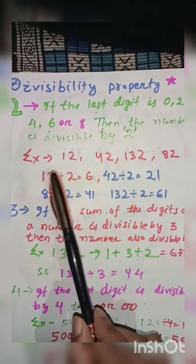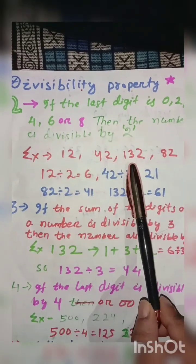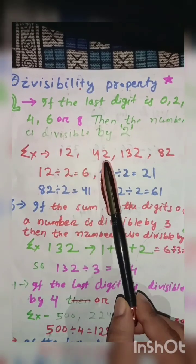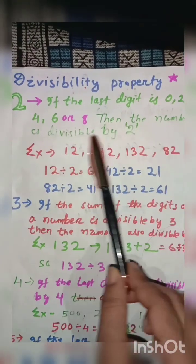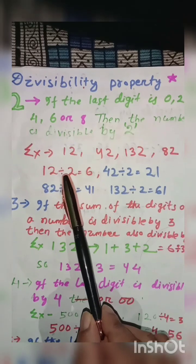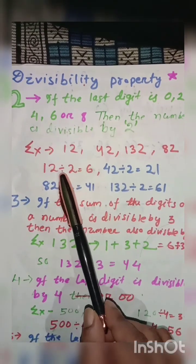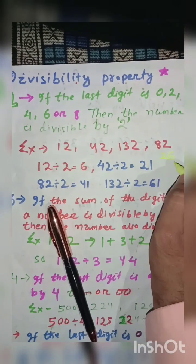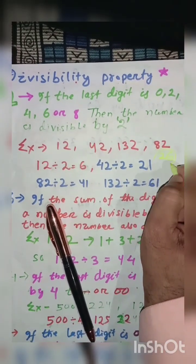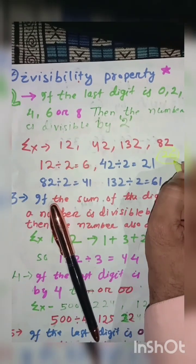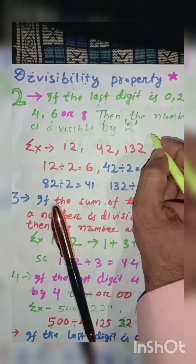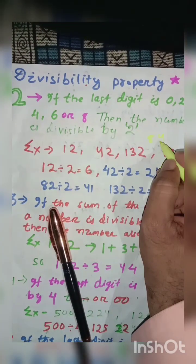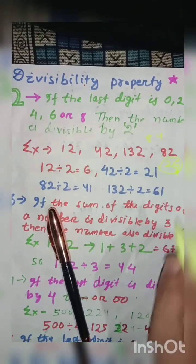Here the example is given: 12, 42, 132, 82. These numbers have 2 in their units place, so all these numbers are divided by 2. If you take another number like 26, it is also divisible by 2. The units place is 6. Suppose you take 84, it is also divisible by 2 because it has 4 in its units place.